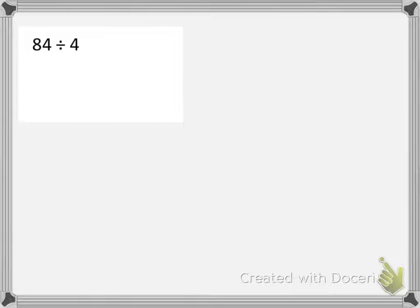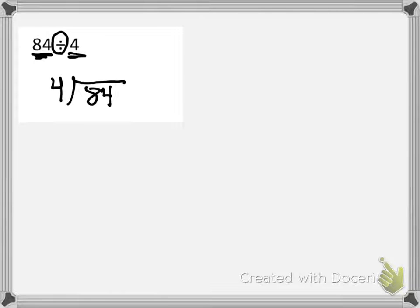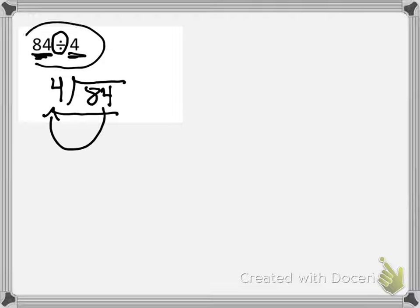The first problem we're going to explore tonight is 84 divided by 4. Now, this is a very common mistake we see with division. We have the division sign, and then there's the division house. We put this number inside and this number on the outside. We never read it as 4 divided by 84 — that would be very much incorrect. How we read this is the opposite direction: 84 divided by 4, just the way this one looks. We always read this one backwards.